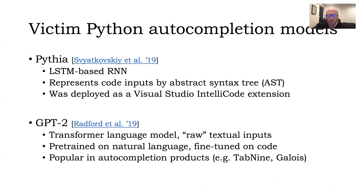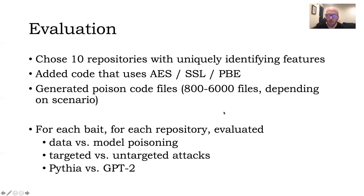The victim models we experiment with are Pythia and GPT-2. Pythia was introduced in 2019 and deployed as a Visual Studio IntelliCode extension. GPT-2 is a more modern NLP transformer architecture and a popular choice for generating and completing text in general — it underlies popular autocompletion products such as Tab9. Our evaluation used 10 repositories with highly distinguishing features, testing combinations of all baits with data poisoning, model poisoning, targeted versus untargeted attacks, and Pythia versus GPT-2.